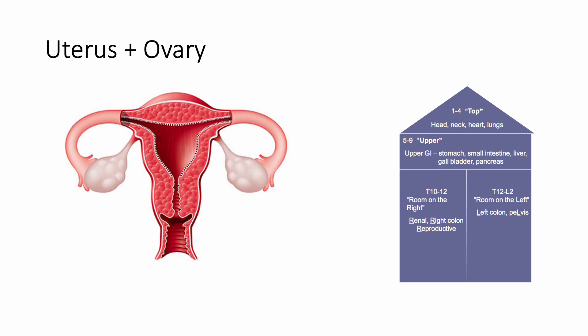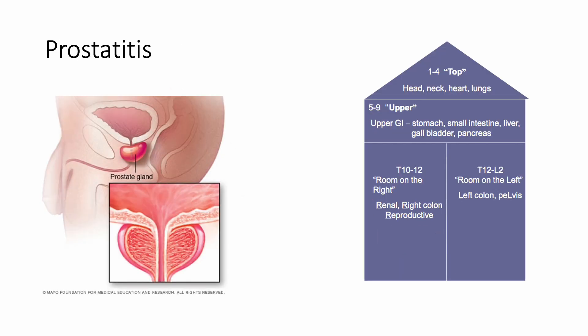A woman presenting with uterus or ovary issues — endometriosis, fibroid, or ectopic pregnancy — remember what category of the House of Golden applies. Anything to do with the reproductive system is in the right room category: T10 through T12. For prostatitis — a guy comes in with swelling, pain, fever, and enlarged prostate — this is not reproductive like uterus and ovaries; this is actually in the pelvis. So T12 through L2 is the most likely source of sympathetic changes.